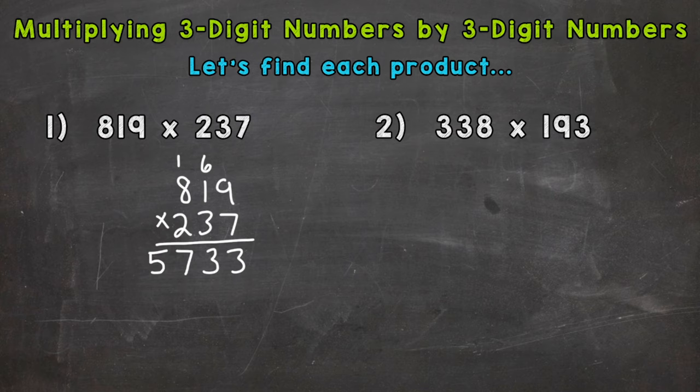We are done with the 7. I like to cross things off as we go so we don't get confused with any other numbers that are carried later in the problem. Now we move to the 3 that has a value of 30, so we put a 0 here for our next step to represent that 30.